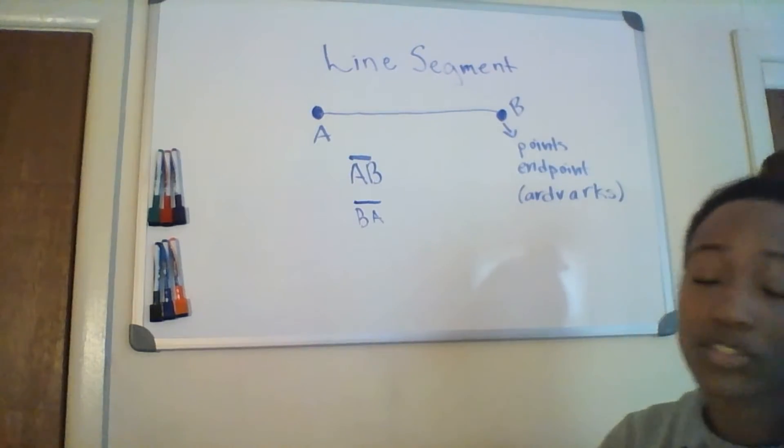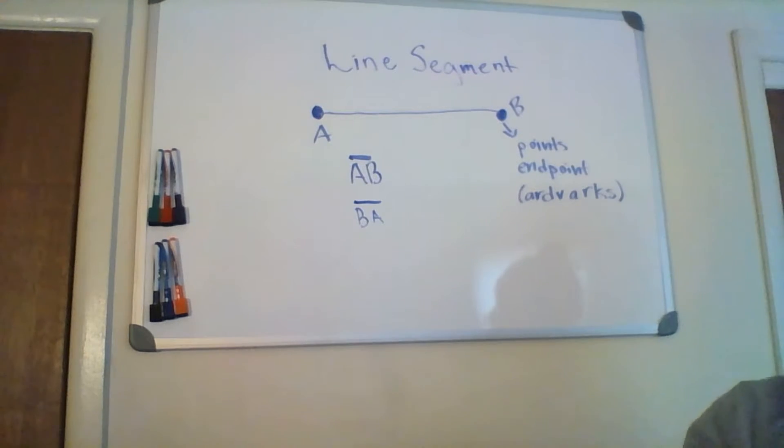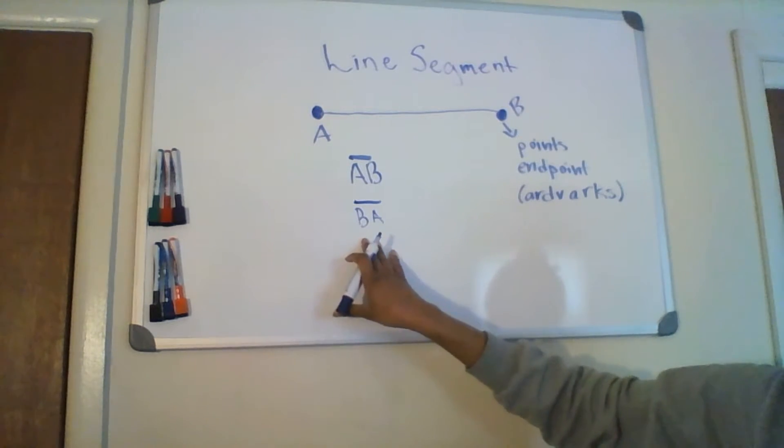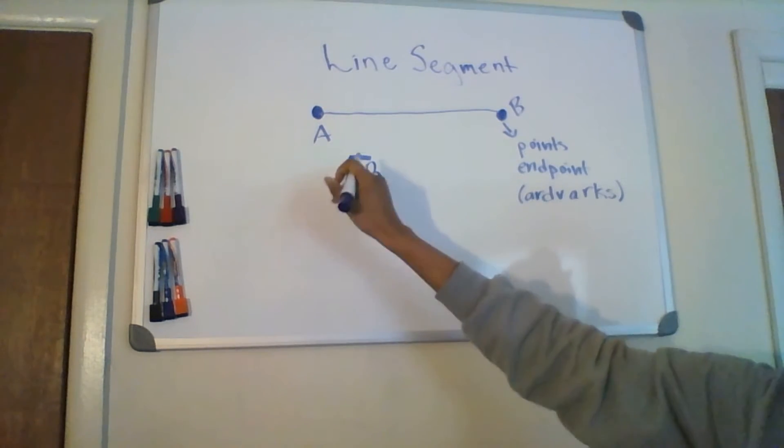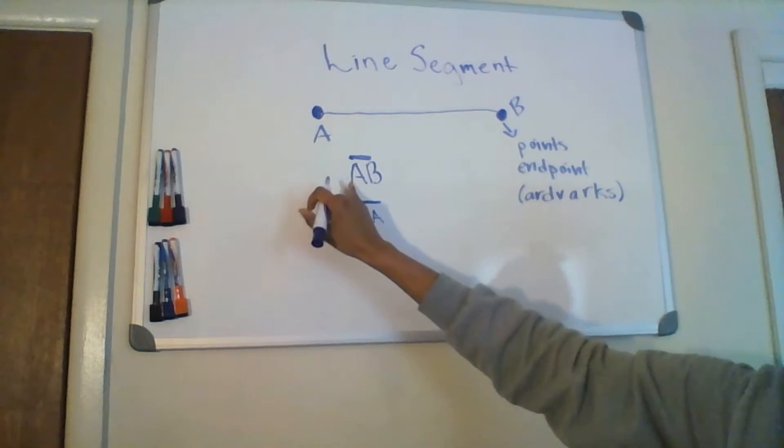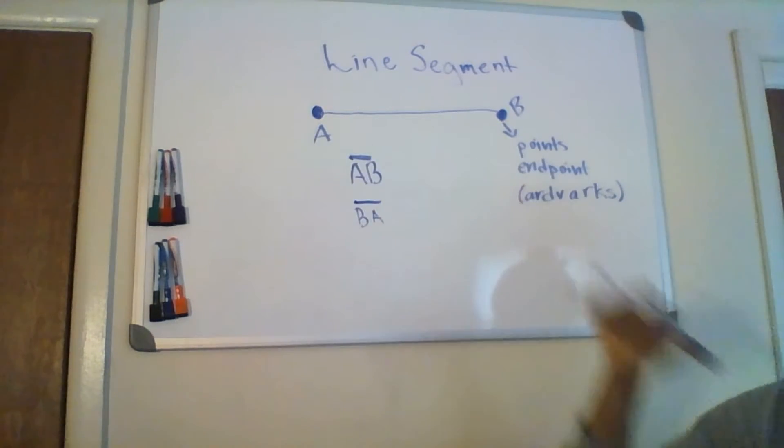There's really no directionality with the line segment. So it doesn't matter which letter you write first, but my brain goes to this as the default identification, just to write AB, to go in order to make things less confusing.